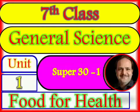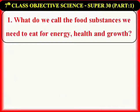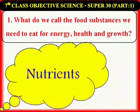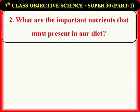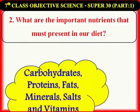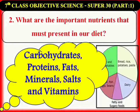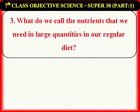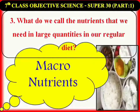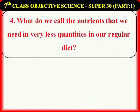What do we call the food substances we need to eat for energy, health and growth? Nutrients. What are the important nutrients that must be present in our diet? Carbohydrates or carbs, proteins, fats or lipids, mineral salts, and vitamins. What do we call the nutrients that we need in large quantities in our regular diet? Macronutrients.